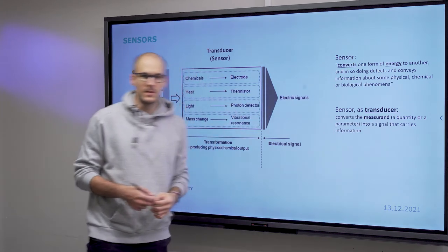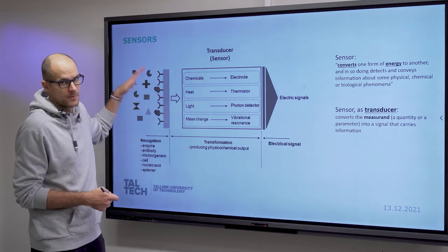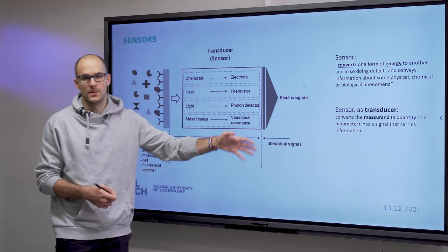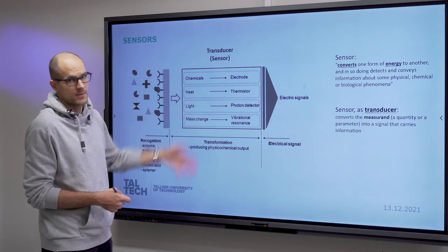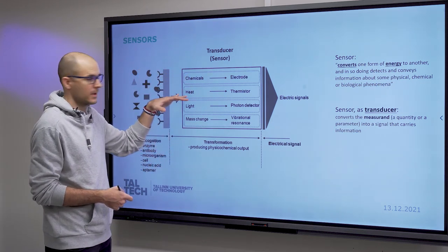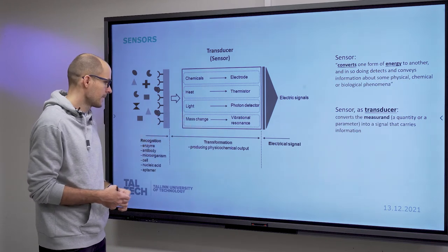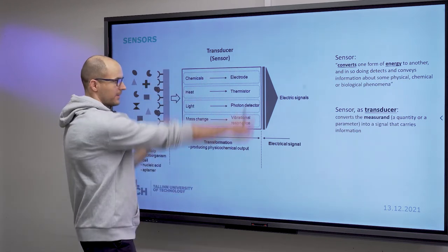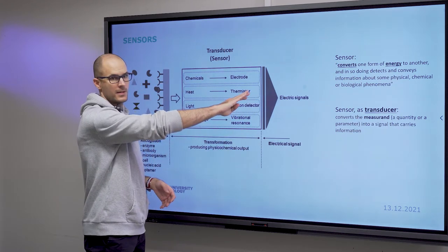In our case, it usually translates to converting some sort of reaction product to an electrical signal. And how it's converted—there are various methods: chemical, thermal, electromagnetic, and mass-change-based. So the sensor is what does the transformation, and then you get an analog electrical signal.